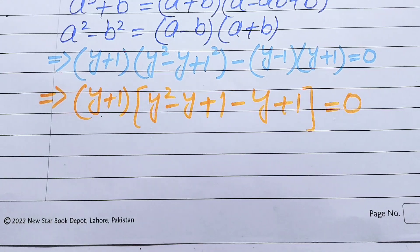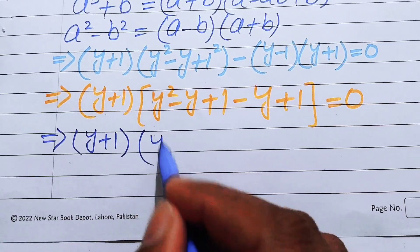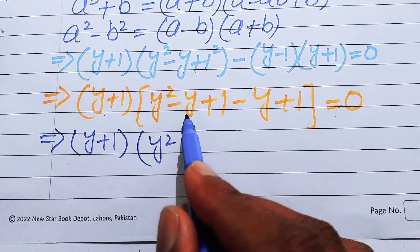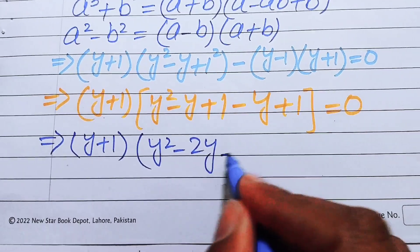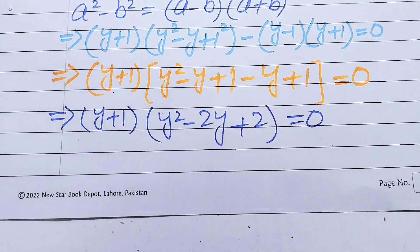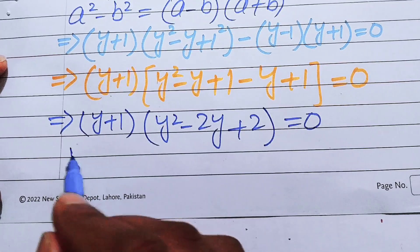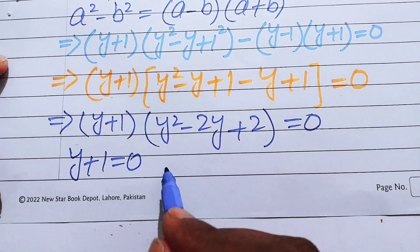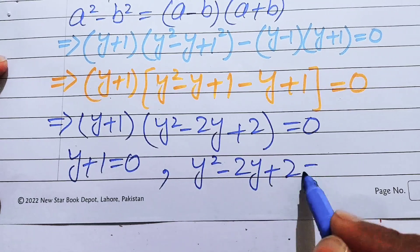Simplifying, we combine like terms inside the bracket: minus y and minus y gives minus 2y, and 1 plus 1 gives 2. This yields y plus 1 times y squared minus 2y plus 2 equals 0. We now split into two cases: y plus 1 equals 0, and y squared minus 2y plus 2 equals 0.